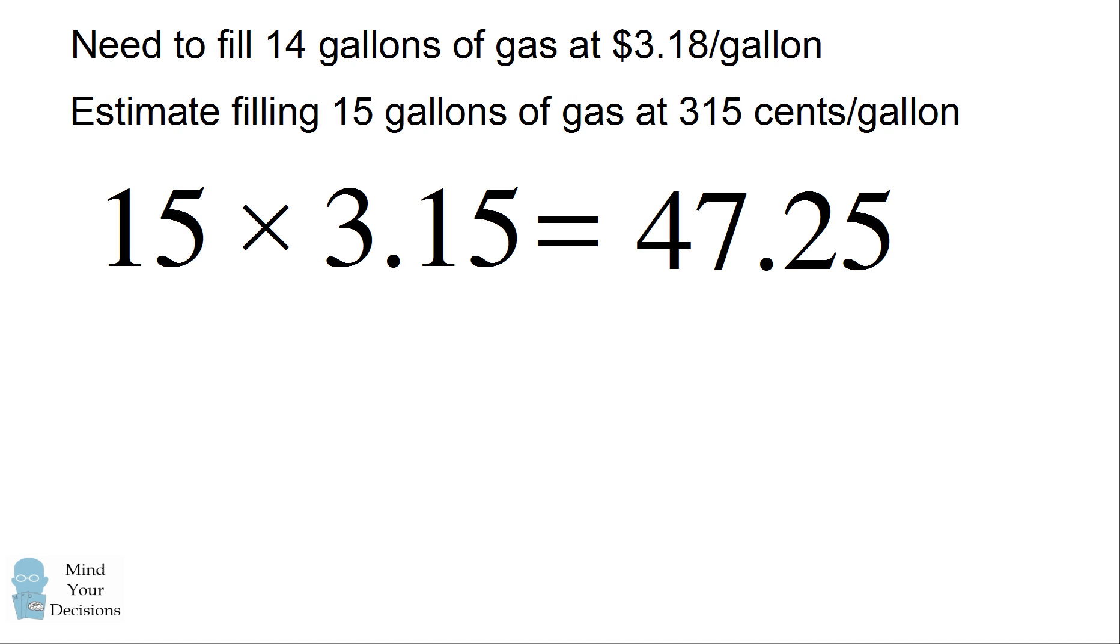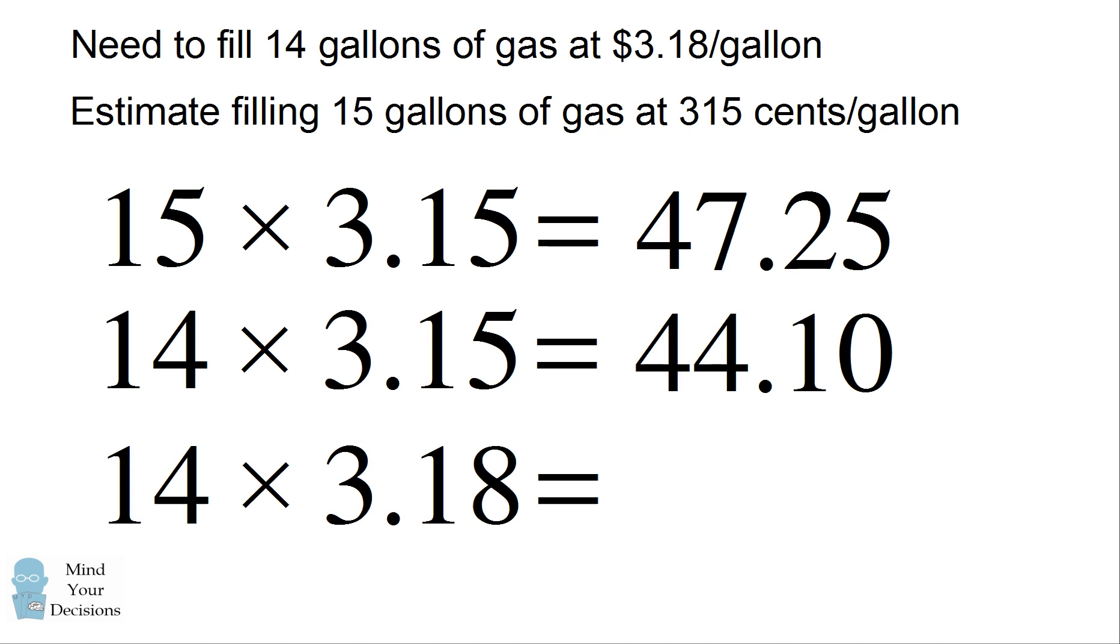But of course, we only need to fill 14 gallons. So if we wanted to fill one fewer gallon, we would be multiplying 14 by 315. So we subtract 315 from 4725. So we subtract 3 dollars, we get to 44. Then we subtract 15 cents. And then we get 44.10. So we figured out that 14 times 315 is 4410. And this is extraordinarily close. We wanted to solve 14 by 318. And that's 4452. So using this process of multiplying two numbers ending in 5 and doing a slight modification, we actually were able to get within 42 cents of the exact answer. And we could do this all in our head.